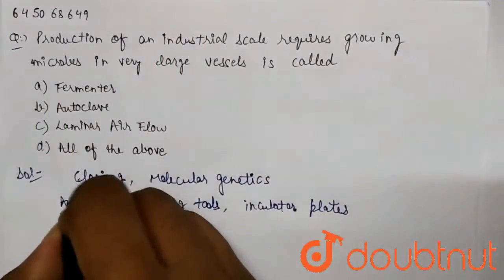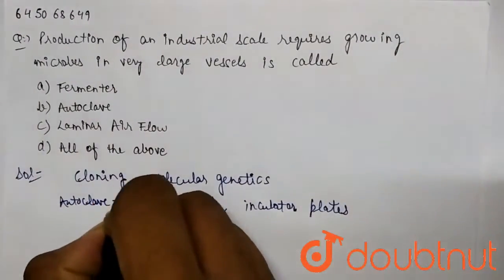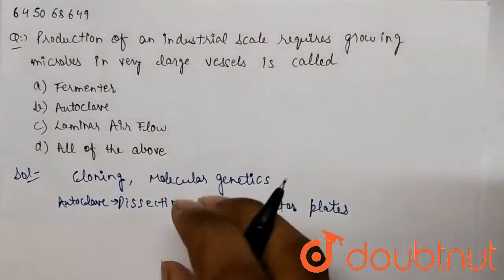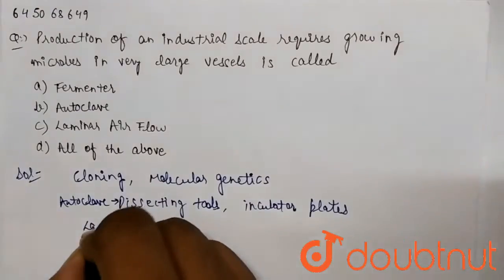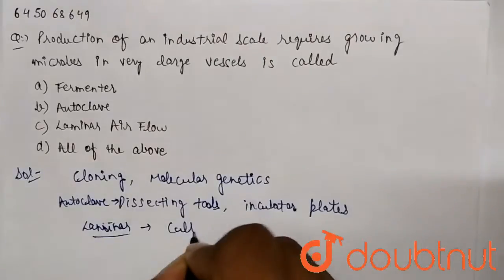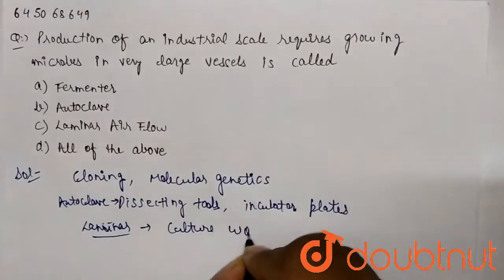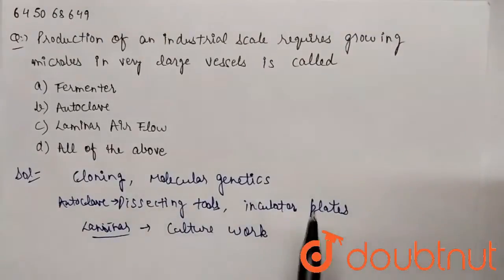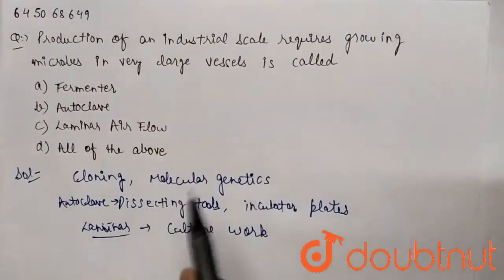Whereas laminar airflow is basically a high-build system for doing our culture work. So cell culture work - we always prefer to do in the laminar airflow where a proper temperature and proper airflow is maintained such that there is no contamination possible.